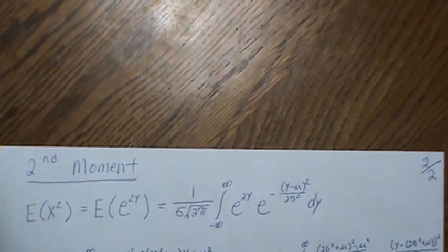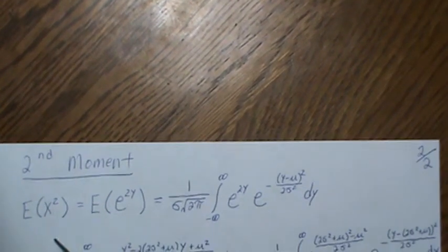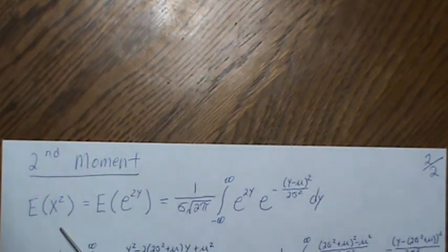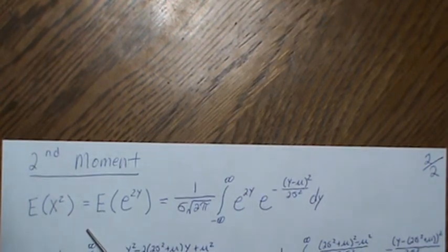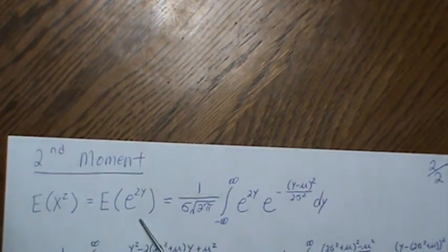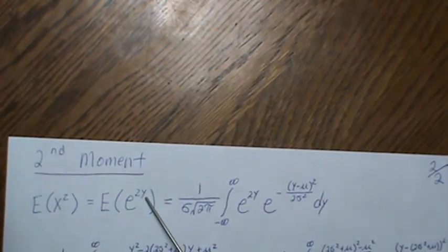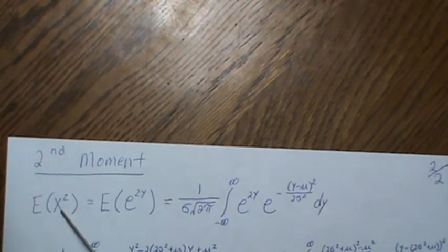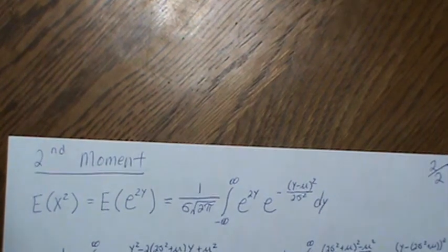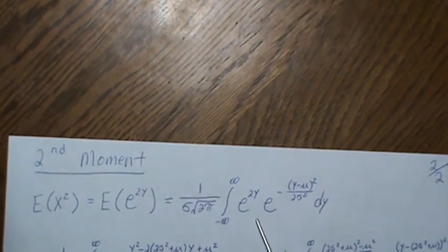Now the second moment, we will do something similar. We'll use the law of the unconscious statistician to go from here to here. We plug this in with the normal distribution, as opposed to this with the log normal distribution. And we get this.